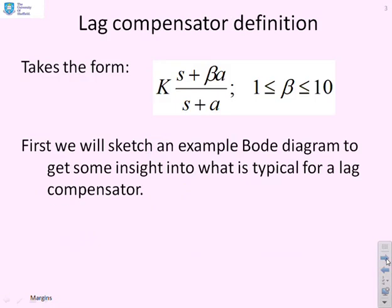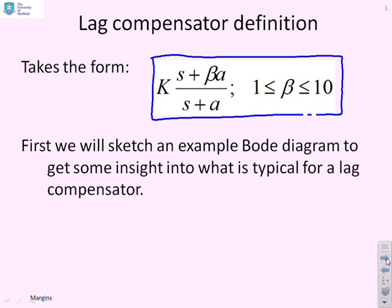First then, a definition. What is a lag compensator? Well, it takes the form given here. You'll see K, S plus beta A, divided by S plus A, where in particular we know that beta is bigger than 1 and usually considered to be less than 10.